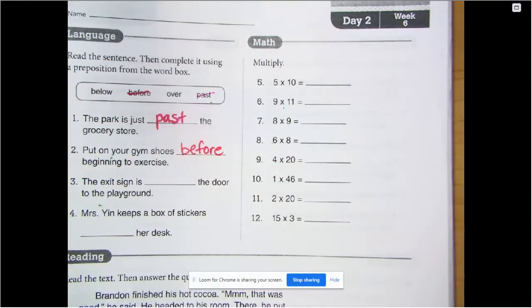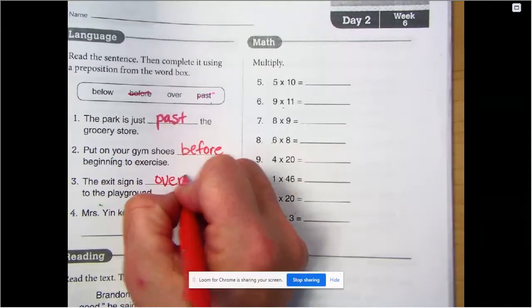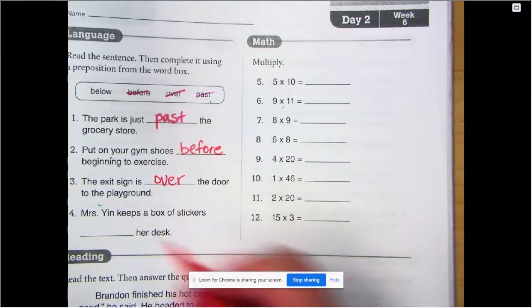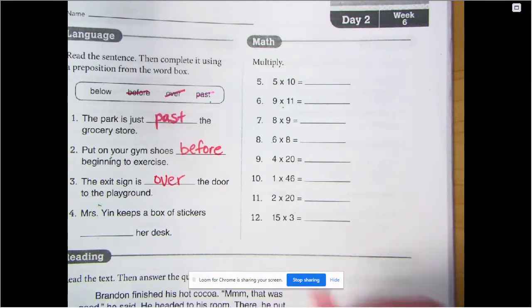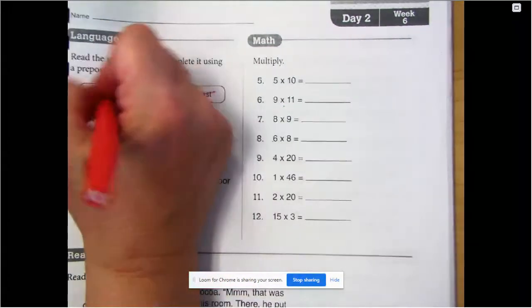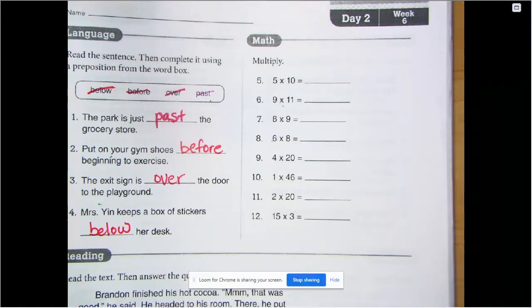The exit sign is blank the door to the playground. It is usually above a door or over the door. Mrs. Yin, excuse me, keeps a box of stickers below her desk. All right. If you have any mistakes, go ahead and fix them.